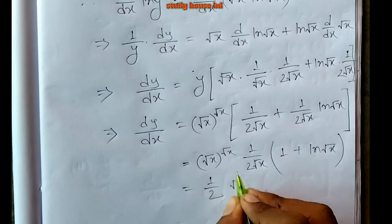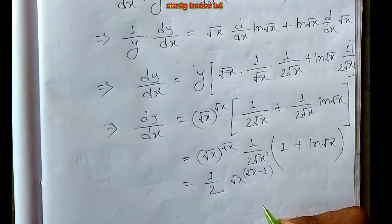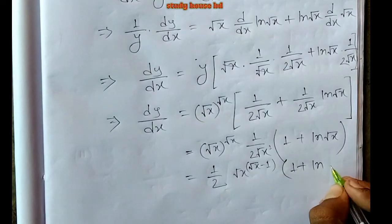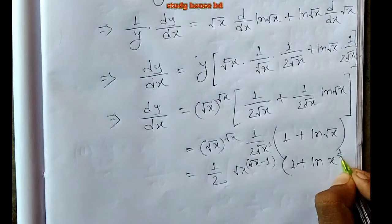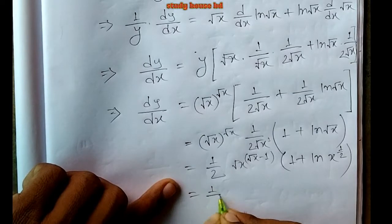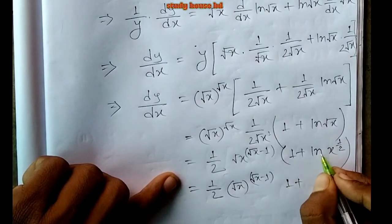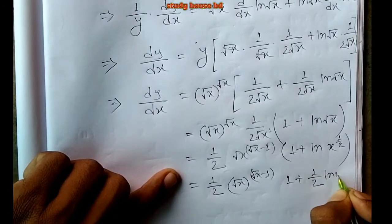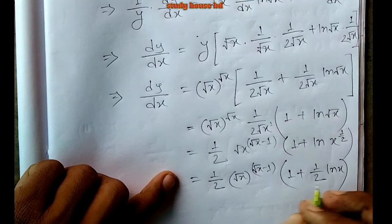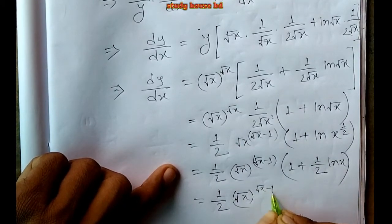After applying the product rule and simplifying, taking 1/(2 root x) common, we get dy/dx equals root x to the power root x times (1/(2 root x)) times (1 plus ln root x). Simplifying further gives a clean final answer.